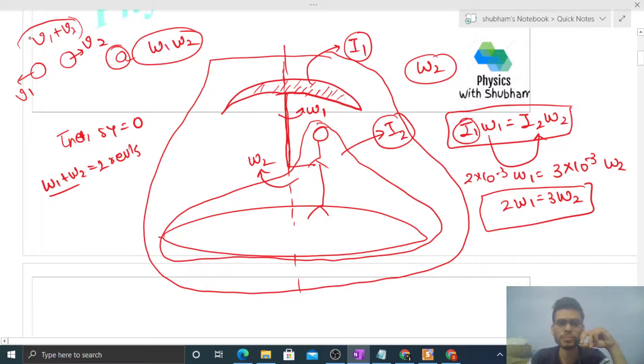Aur aap is tarah se feel karo ki agar hum clockwise direction ko positive lete hain—generally anti-clockwise ko positive lete hai—so omega 2 positive hoga anti-clockwise, similarly omega 1 negative hoga. So jab aap minus karoge na toh ye finally add ho jayega. Like omega 2 positive ho hai, that is anti-clockwise, aur omega 1 negative ho hai. So in dono ka jab hum subtraction lenge na toh add ho jayengi dono. So easily omega 1 plus omega 2, that is 2 revolutions per second.